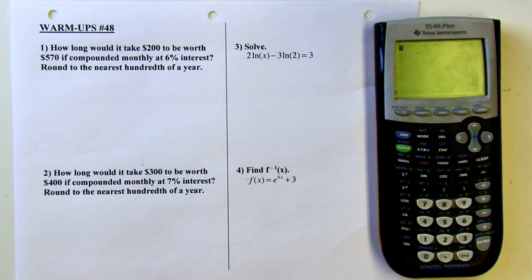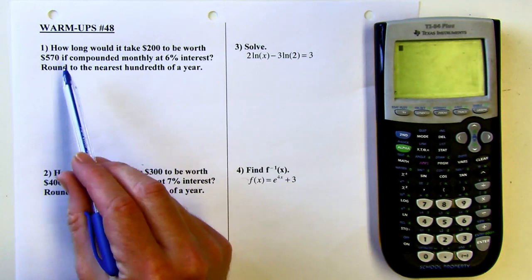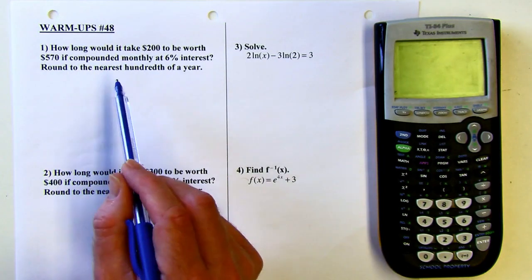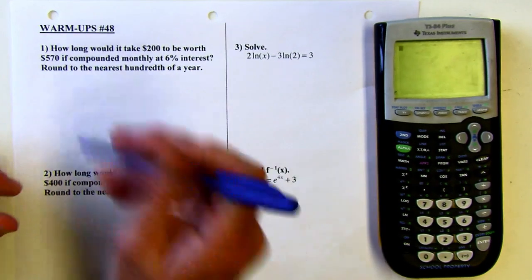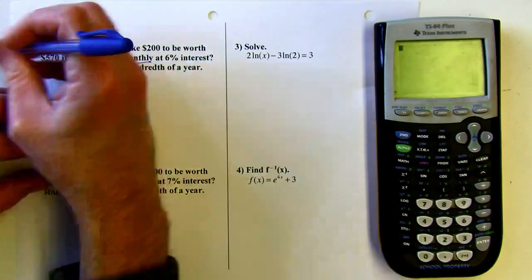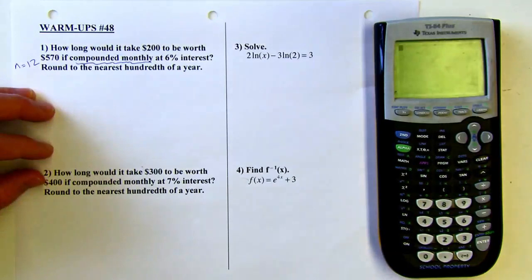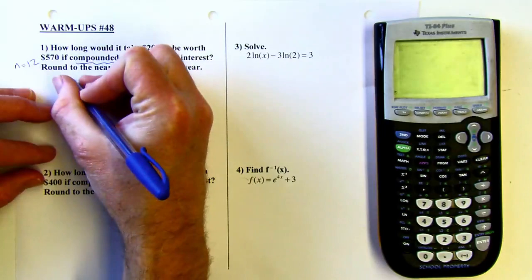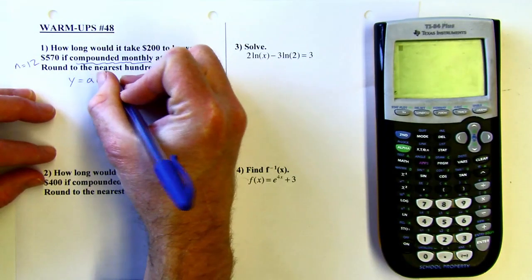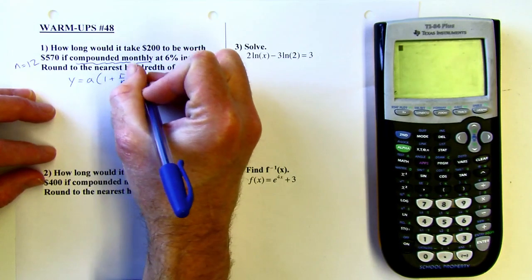Here is warm-up number 48. Number one, how long would it take for $200 to be worth $570 if compounded monthly at 6% interest? So let's start setting this up. We're compounding monthly, so that means n is going to be 12. And that also means we're using the compound formula that features the n's. So here is the formula.